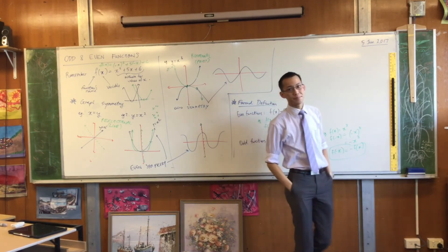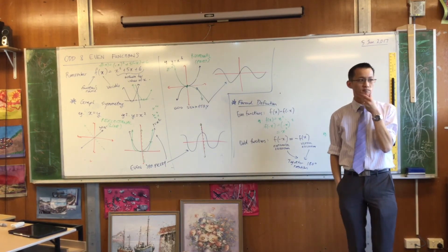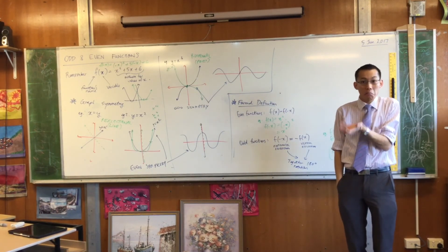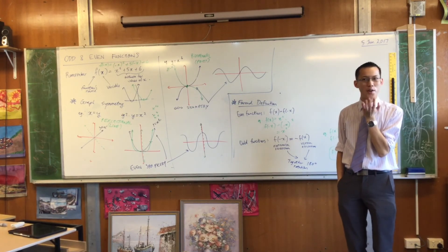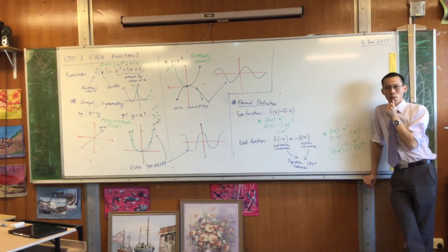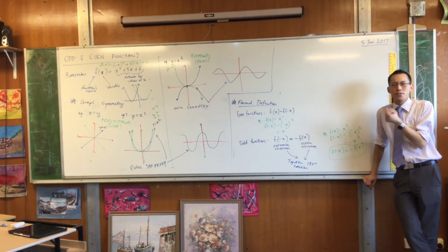Well, it has an even power, doesn't it? x squared. But it is not an even function. Why not? What would I need for it to be an even function?